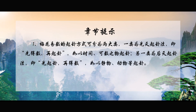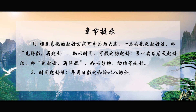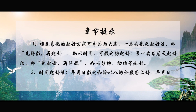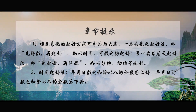章节提示：一、梅花易数的起卦方式可分为两大类，一类为先天起卦法，即先得数再起卦，如以时间可数之物起卦；另一类为后天起卦法，即先起卦再得数，如以静物、动物等起卦。二、时间起卦法：年月日数之和除以八的余数为上卦，年月日时数之和除以八的余数为下卦。